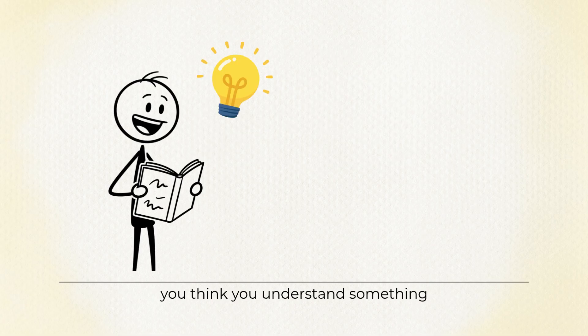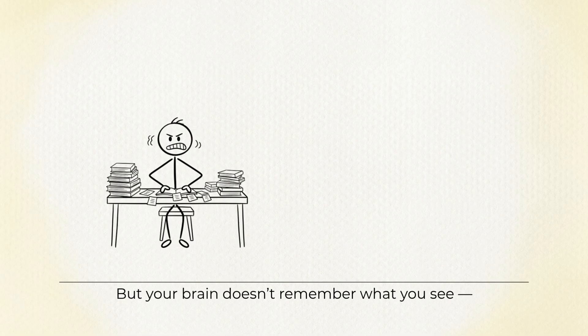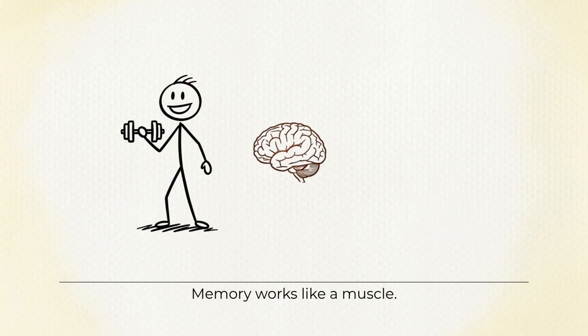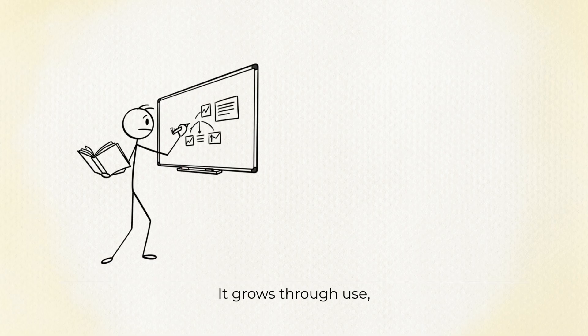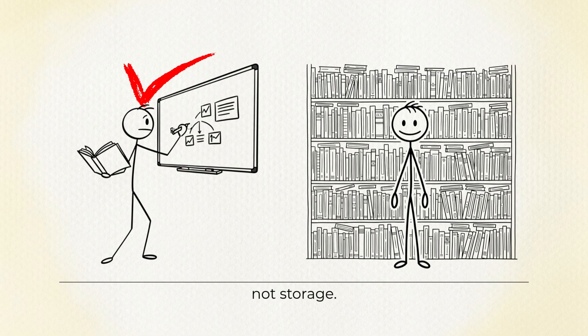Psychologists call this the illusion of fluency. You think you understand something just because it feels familiar. But your brain doesn't remember what you see, it remembers what you recall. Memory works like a muscle. It grows through use, not storage.